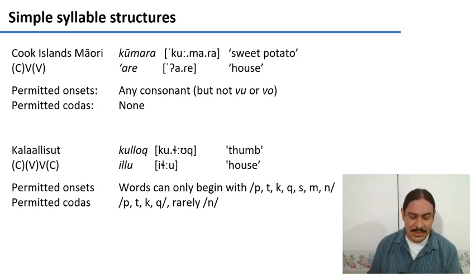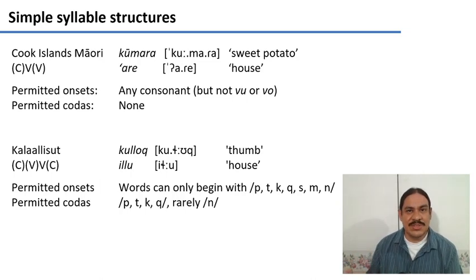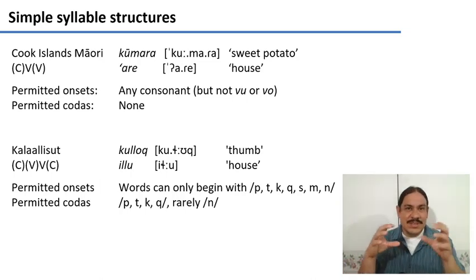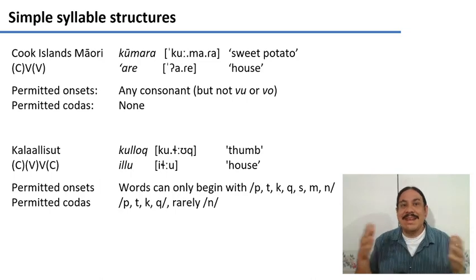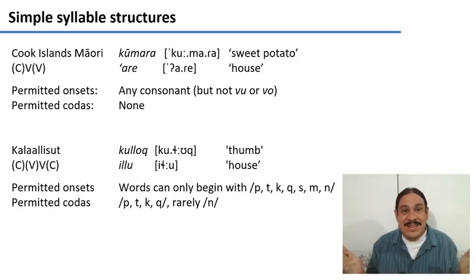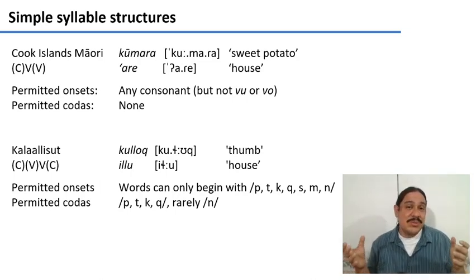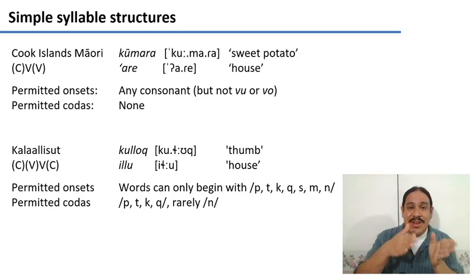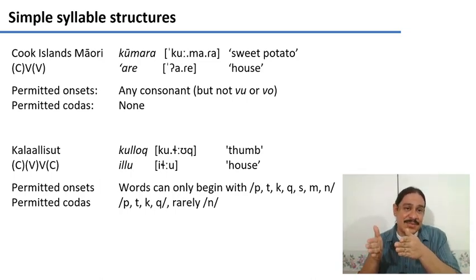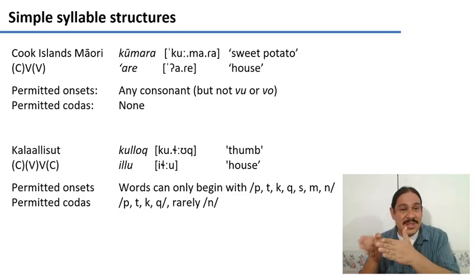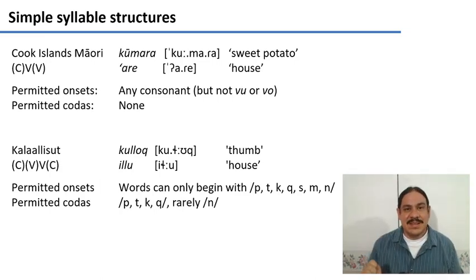Here we have two examples of relatively simple syllable structures. Simple just means structurally simple — these languages can say anything that any other language can. They just do it with syllables that are consonant and vowel, in the case of Cook Islands Māori, or consonant-vowel-consonant, in the case of Kalaallisut from Greenland.